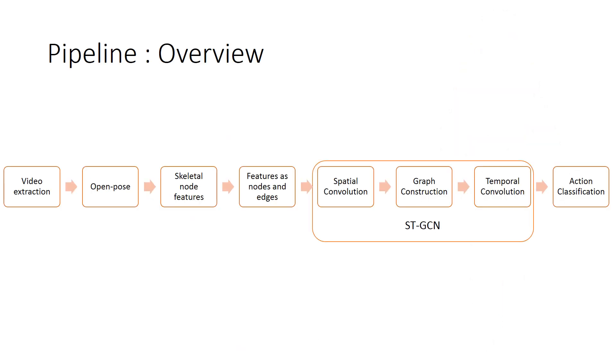This is an overview of the entire algorithm. It starts with video extraction. We are using an open source library called OpenPose which will extract the skeleton information. This skeleton information is then divided into two parts: the edge information and the node information.